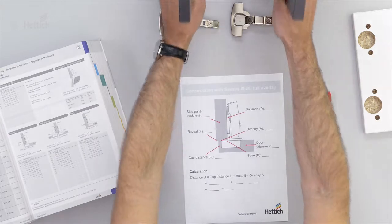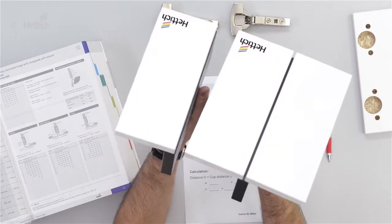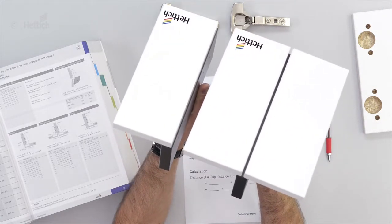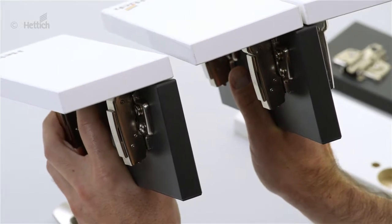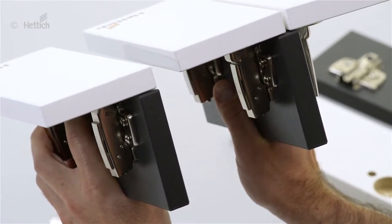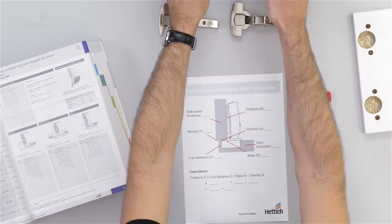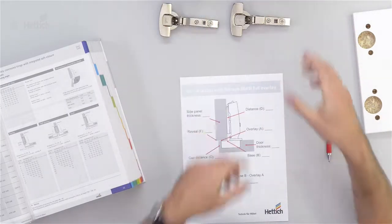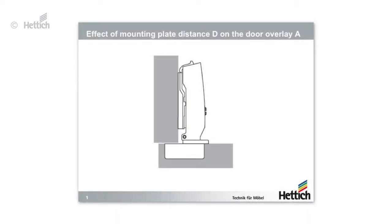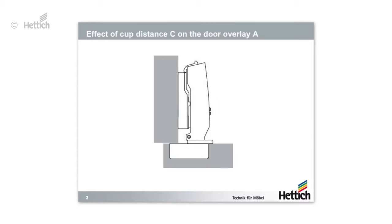We can also have a look here on the mock-ups and you see that there is a different shape of the hinge arm which gives us the base B of the hinge, what we need for calculating the mounting plate distance. By changing the distance D, we are also changing the overlay of the door and the same applies if we are changing the cup distance C.